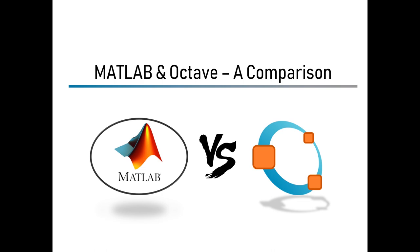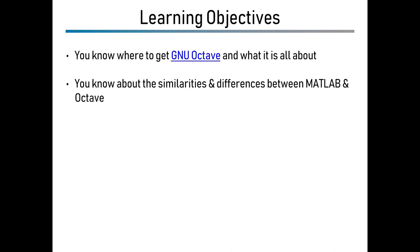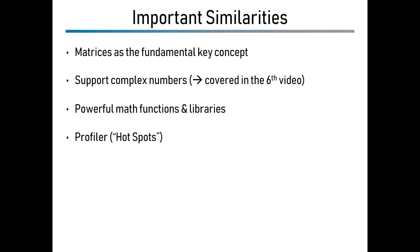So it's MATLAB versus Octave today — a small comparison. The learning objectives are: you know where to get GNU Octave and what it's about, and you know the similarities and differences between the two. The most important similarities are that matrices are the fundamental concept of both tools, both support complex numbers, both have powerful math function libraries, and both have a profiler where you can measure which parts of your code take the longest and find hot spots.